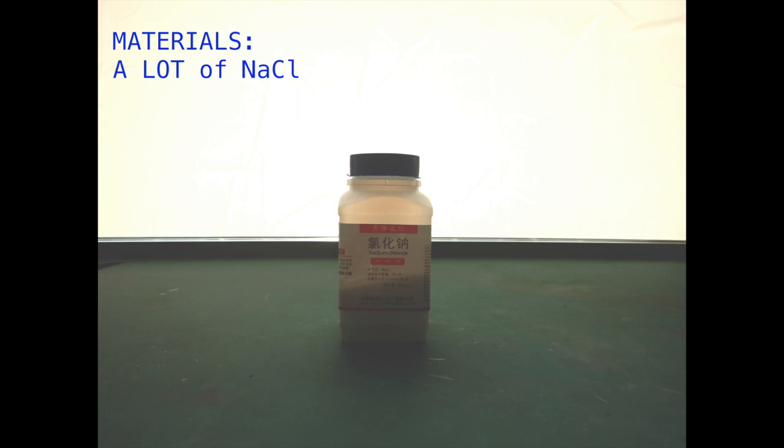For making hypochlorite and chlorates, we must choose a chloride salt to start with. I chose sodium chloride since it is the cheapest, and I got it on hand. Potassium and calcium chloride would also work.